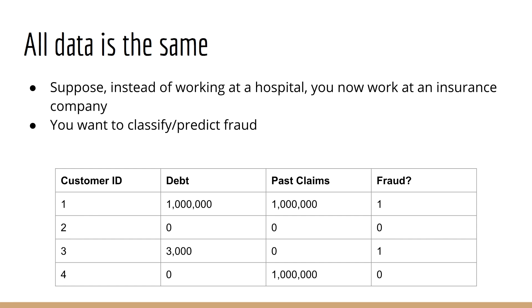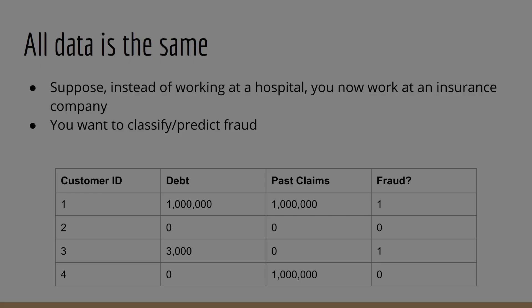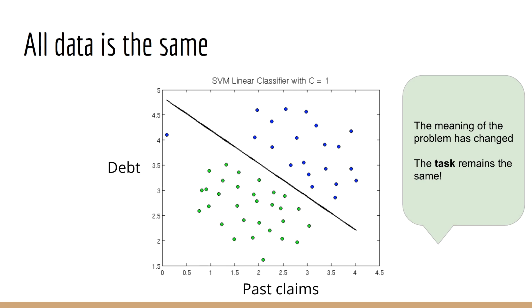One lesson that goes hand in hand with the geometrical perspective is another motto of mine. All data is the same. Let's use another example to illustrate the point. Suppose instead of working at a hospital, you now work at an insurance company. Your job is to do fraud detection, or in other words, classify instances of fraud. So again, you have two categories, fraud or not fraud. You're trying to predict whether or not a given claim is fraud. Let's say again you've collected some data points, again, with two input features. Suppose these are, number one, the amount of debt the claimant has, and number two, the total amount of past insurance claims. And again, it's the same story. Once you've collected all your data points, you're going to plot them and color them on a grid. Your job again is to separate these data points with a line or a curve. So, you see that, just because we changed the meaning of the problem, we haven't changed what our actual task is. It's still to plot these points and separate them with some kind of decision boundary.